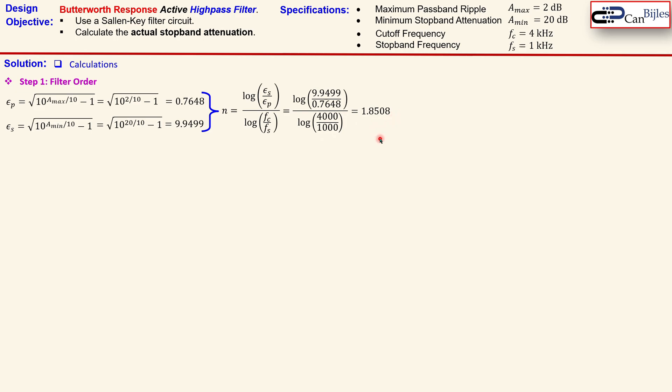When you substitute here the values, you get here 1.85 approximately, but we need to use integer values in order to design our filter circuit. Of course you can try to go for the first order but that is not sufficient, so we need to use n=2 or the second order filter.